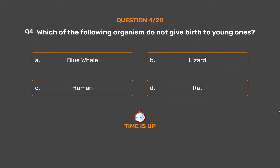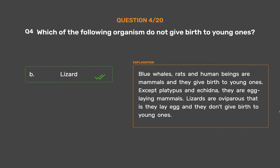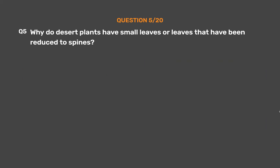The correct answer is Option B: Lizard. Blue whales, rats and human beings are mammals and they give birth to young ones, except platypus and echidna, which are egg-laying mammals. Lizards are oviparous, i.e., they lay eggs and do not give birth to young ones.